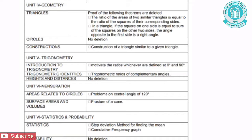Unit 6 is Mensuration. The chapter under Mensuration is Areas Related to Circles. The topic removed is Problems on Central Angle of 120 degrees. The second chapter under Mensuration is Surface Areas and Volumes. The topic removed from Surface Areas and Volumes is Frustum of a Cone.